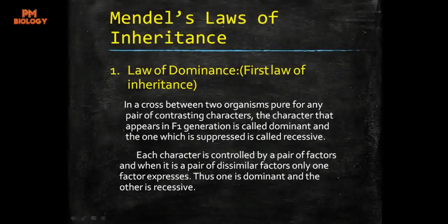In a cross between two organisms pure for any pair of contrasting characters, the character that appears in the F1 generation is called dominant, and the one which is suppressed is called recessive. From the monohybrid cross, Mendel saw that the character appearing in the first filial generation (F1 generation) is the dominant one, and the one which is not appearing in F1 generation is the recessive character.